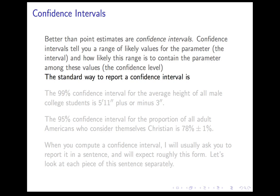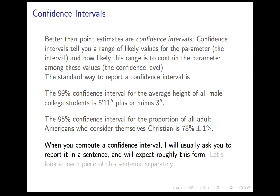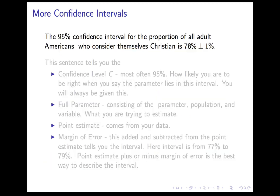The standard way to report a confidence interval is as follows. The 99% confidence interval for the average height of all male college students is 5'11" plus or minus 3 inches. Or, for another example, the 95% confidence interval for the proportion of all adult Americans who consider themselves Christian is 78% plus or minus 1%. I will usually ask you to report a confidence interval in a sentence in that format.